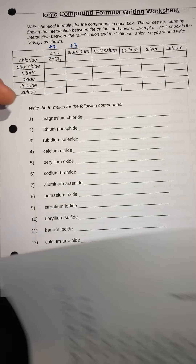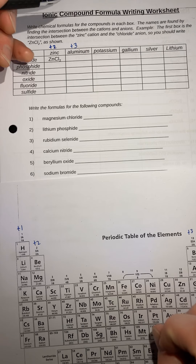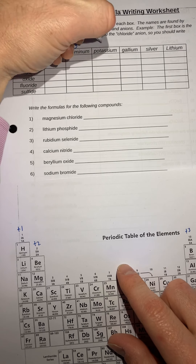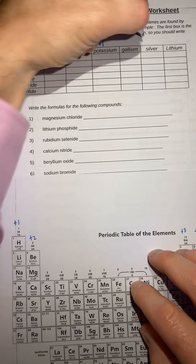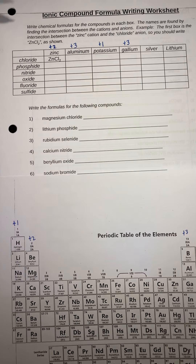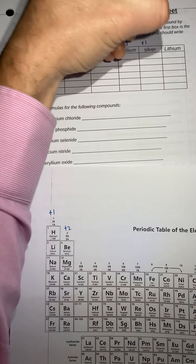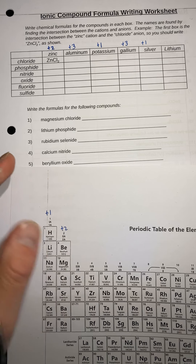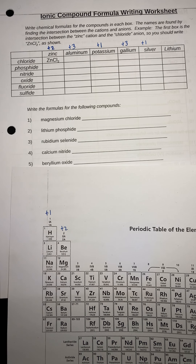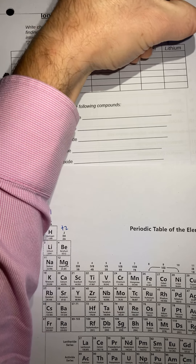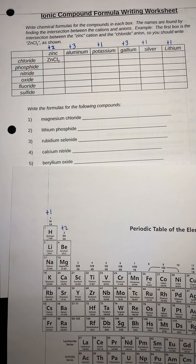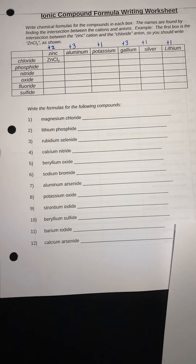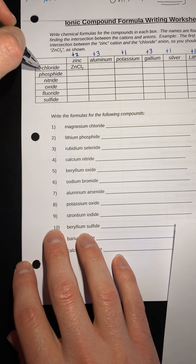Aluminum is positive three. What's potassium? That's going to be positive one. What would gallium be? It would be positive three. Silver is another transition metal — I'll tell you its charge. Silver is a positive one. And then what would lithium be? Positive one. So you have all your positive ions at the top, and all of your negative ions at the side right here.